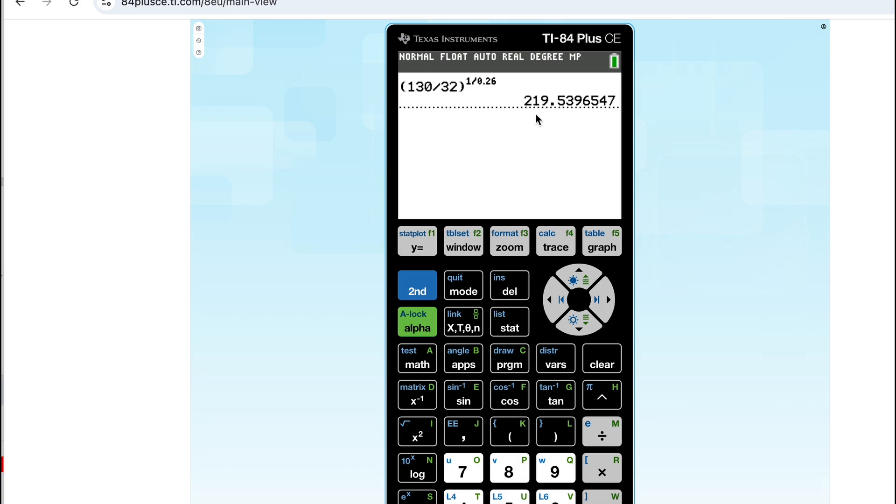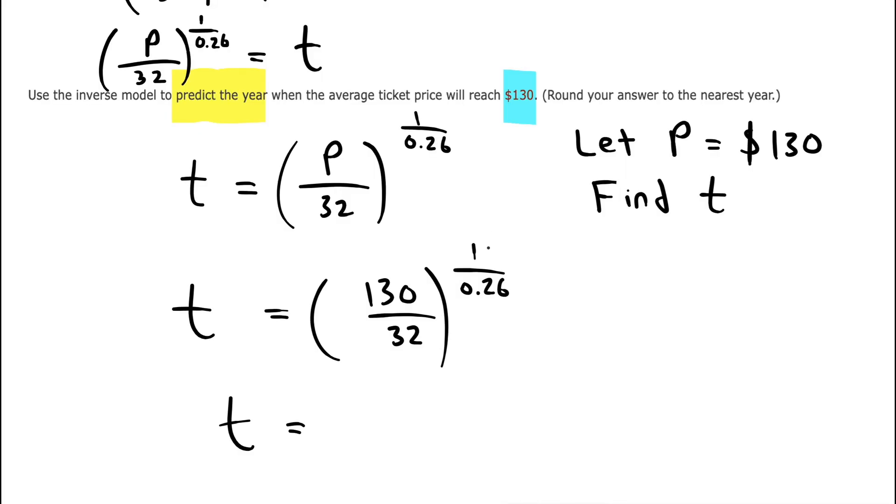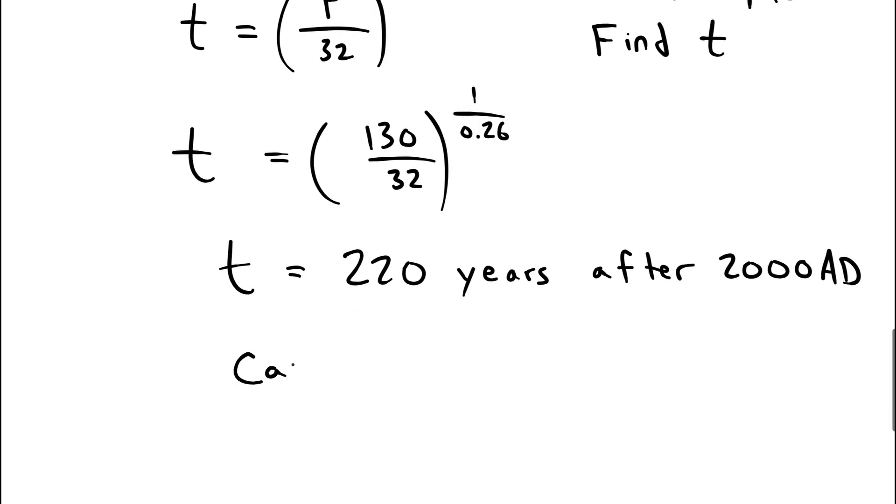So the t is 219 or 220 years. And this is years after 2000, which means the calendar year would therefore be 2220.